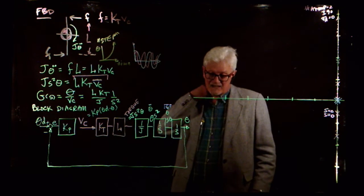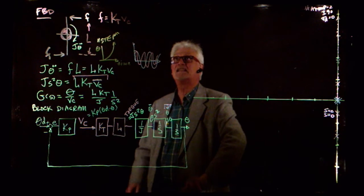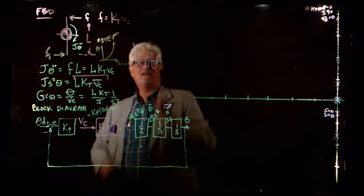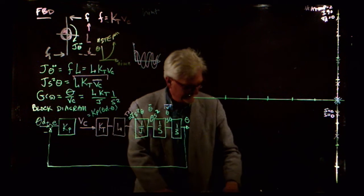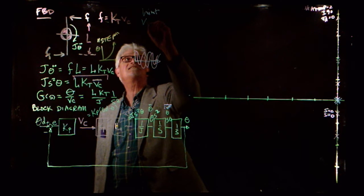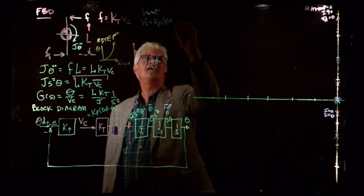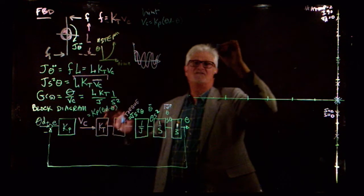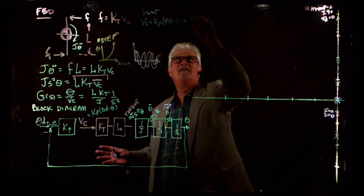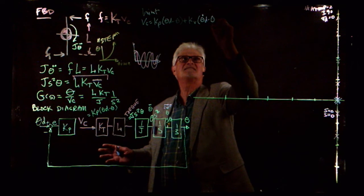In the problem I give you a hint. The hint says: use V_C equals K_P times (theta_desired minus theta). Actually, I should have given you a better hint, because this is a derivative control law. I'm going to put a derivative gain where this is theta_dot_desired minus theta_dot.